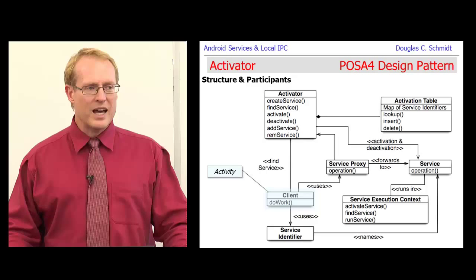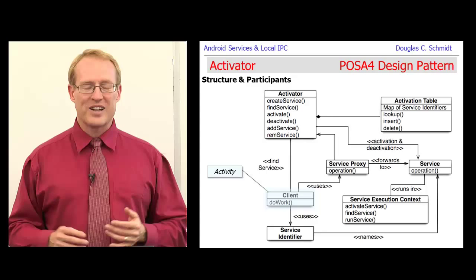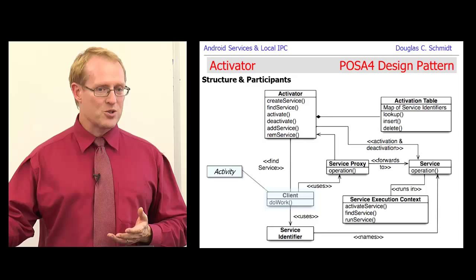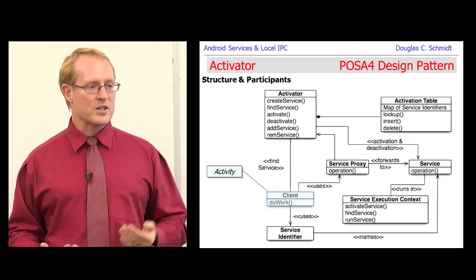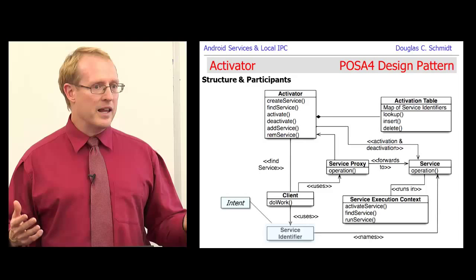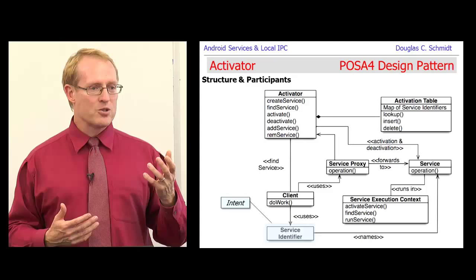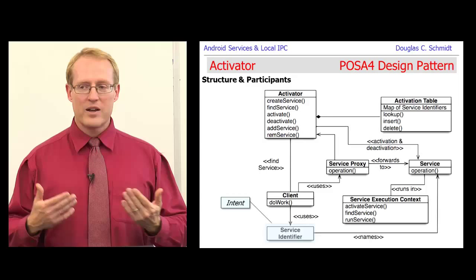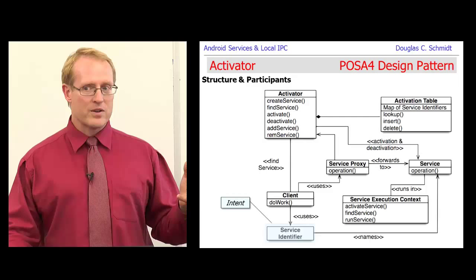Here's a view of the structure and participants of this pattern. There are a lot of pieces but they're all fairly straightforward, especially in their mapping onto Android. There's a client — whoever is going to do something that requires a service to run — which in our environment would be an activity that wants to start a service via start service or bind service. Then we have some way of identifying a service. In internet applications we'd identify a service by IP address and port number — FTP at port 21, HTTP at port 80. In Android, we identify services by intents, either explicit or implicit.